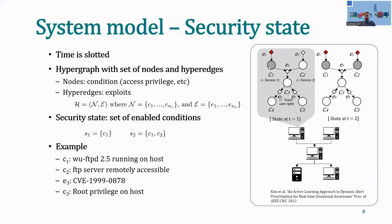In this example, condition C1 is true, that is, something is compromised. Now, what is then a security state? A security state is the set of enabled conditions. In this example, on the left, the state S1 means that condition C1 is compromised. On the right, you see a new state where conditions C1 and C2 are compromised.